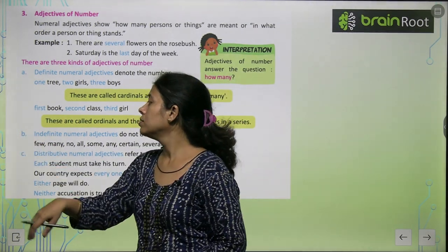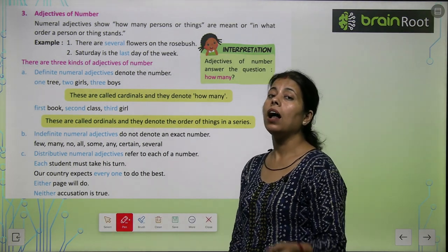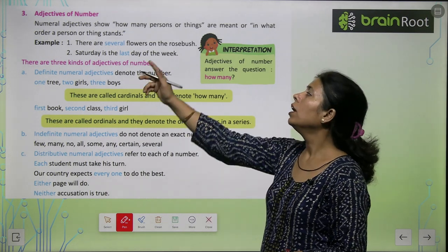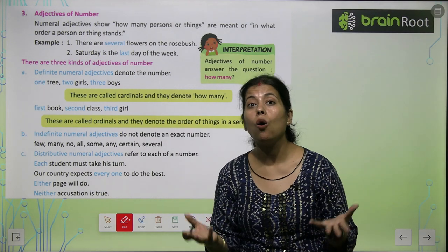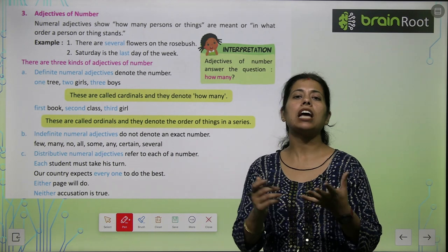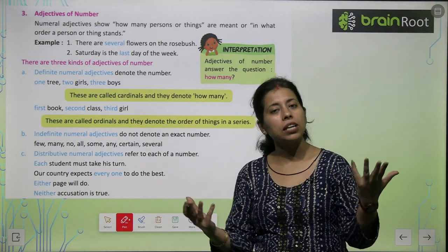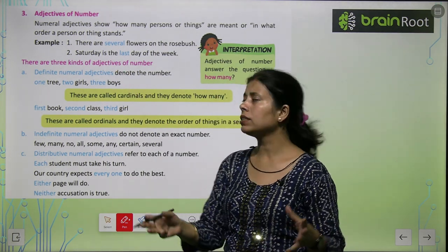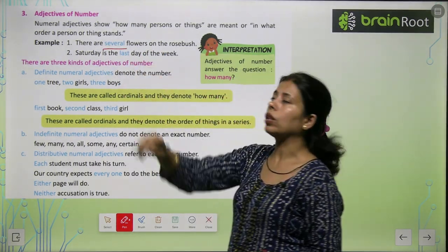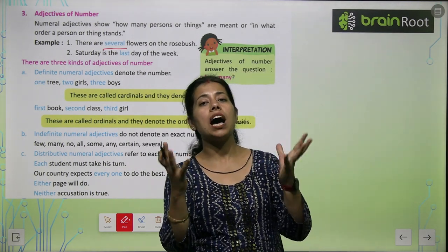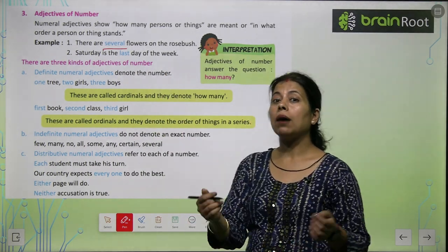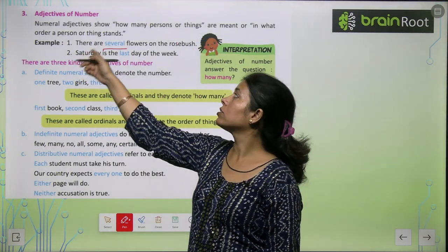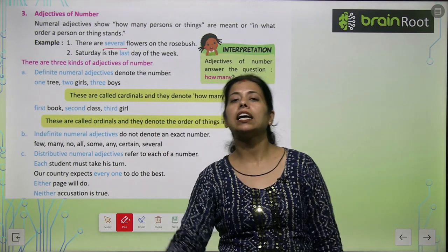Adjective of number — जहाँ हमें number पता चलते हैं। Numeral adjectives show how many persons or things are meant, or in what order a person or thing stands. Example: There are several flowers on the rose bush — rose bush में बहुत सारे flowers हैं। Saturday is the last day — Saturday उस क्रम में last में आता है। In what order a person or thing stands — तो Saturday last stand कर रहा है।